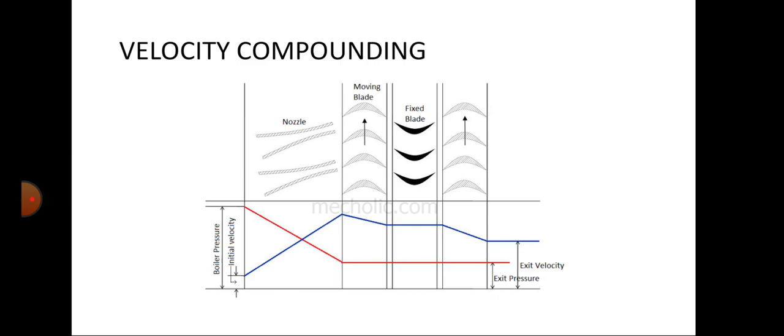The steam first enters the nozzle, then passes over the moving plate, then to the fixed plate, and finally to the moving plate. Below that, the velocity and pressure are shown. The blue line shows the velocity. In the nozzle, the velocity increases and the pressure decreases — we all know the function of the nozzle: velocity increases and pressure decreases.